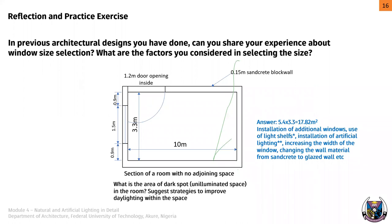That's why we have balconies on the other side — so you're not just having large windows trying to gain as much lighting, but you also have a balcony so you can open it and have both light and ventilation coming in together.